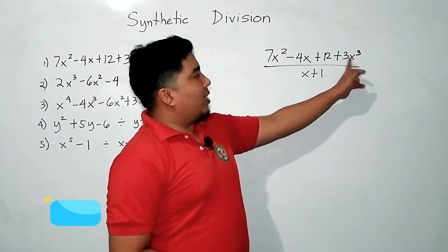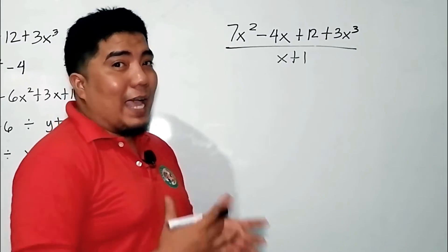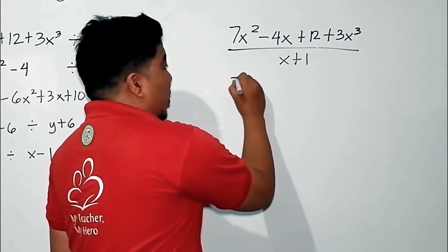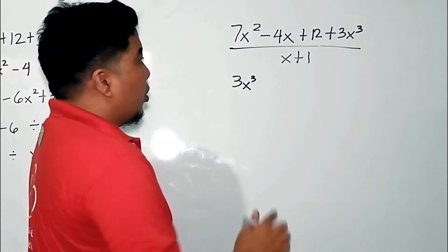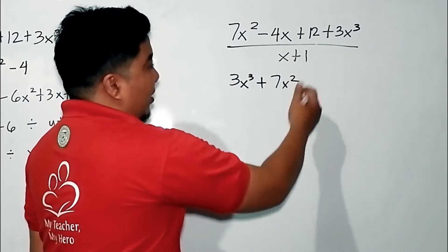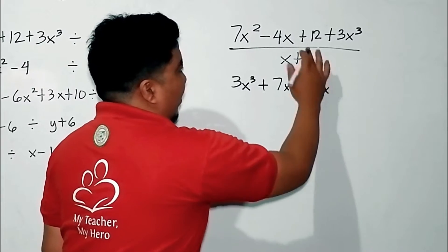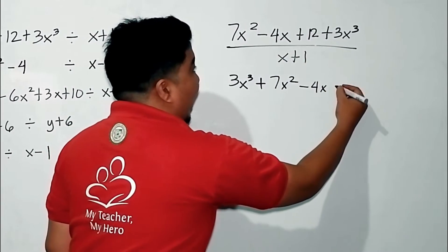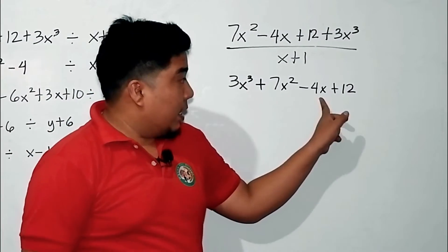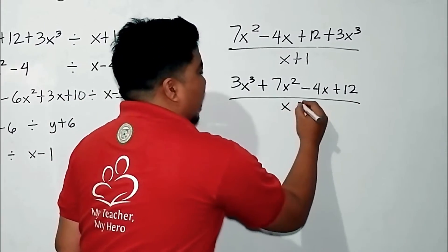If we consider this polynomial, it is not arranged by highest degree, so the first thing we should do is arrange the expression. We have 3x³, then positive 7x², then the linear term, and finally the constant term — the cubic term, the quadratic term, the linear term, and the constant term — divided by x + 1.